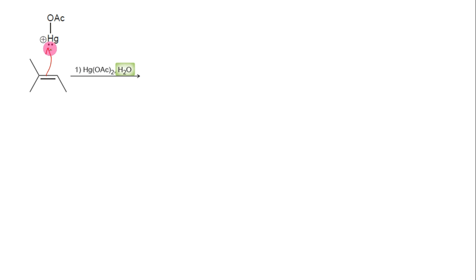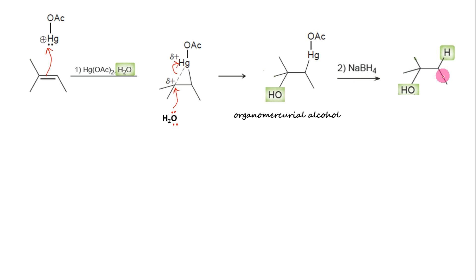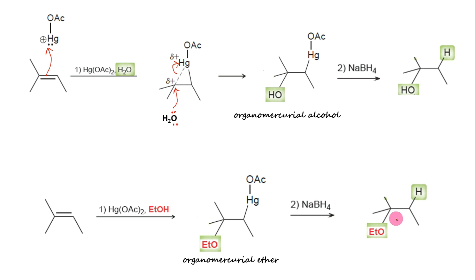Many nucleophiles can be used, including water. Consider this alkene treated with mercuric acetate in the presence of water. The first step is mercuration of the double bond to form the mercurinium ion, which is then opened by nucleophile water on the more substituted end to form an organomercurial alcohol. When the same compound is treated with mercuric acetate in the presence of ethanol, the mercurinium ion will be opened by ethanol to form an ether, called an organomercurial ether, which is then treated with sodium borohydride for demercuration.